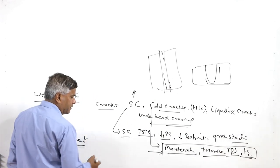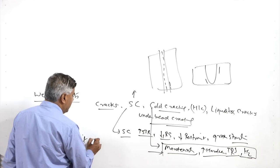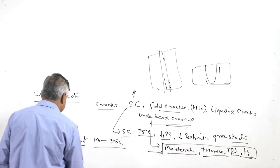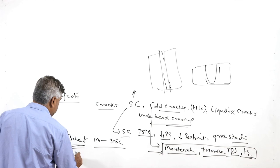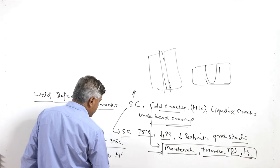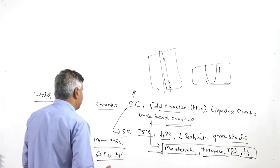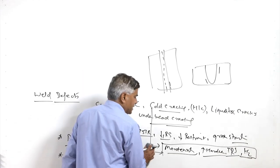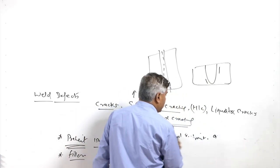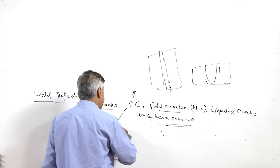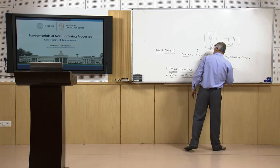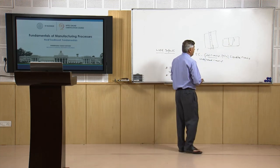Preheating, depending on the carbon content and carbon equivalent of the steel, may range from 150 to 300 degrees Centigrade. Another remedy is selection of suitable filler metals — such as austenitic stainless steel and nickel alloys — which can accommodate hydrogen in the weld metal and accommodate residual stresses easily. These fillers help reduce residual stresses and accommodate the hydrogen present in the weld metal.